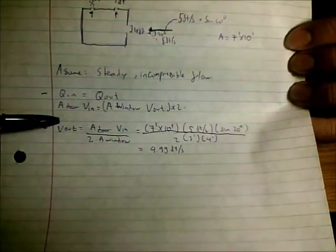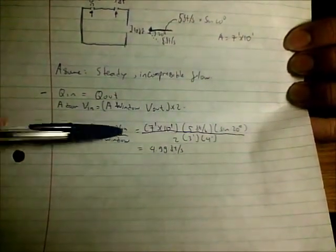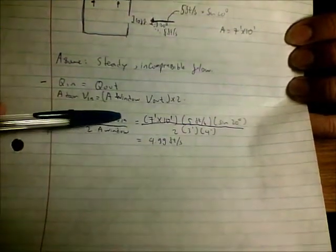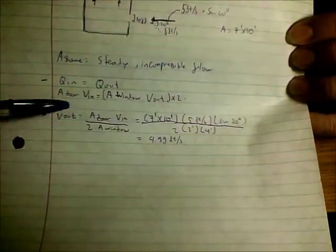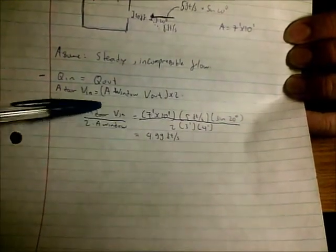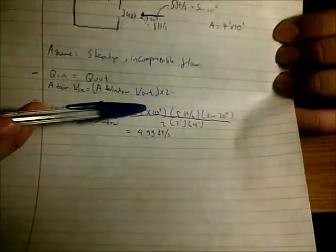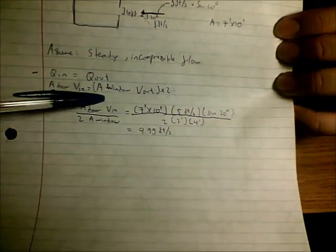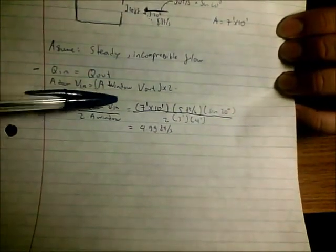Deriving from this equation, V out equals the area of the door times V in, divided by two times the area of the window. Plugging in the numbers, the area of the door is seven feet times ten feet, and the velocity of the air coming in...